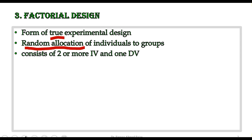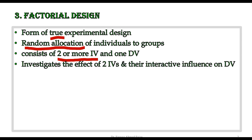Factorial design consists of two or more independent variables and investigates the effect of more than two independent variables on the dependent variable. In normal experimental design we restrict ourselves to only one independent variable and see the effect of that one IV on the DV. Factorial design also investigates the interactive influence of two independent variables on the dependent variable.